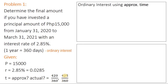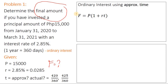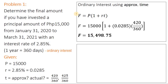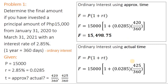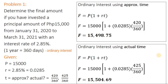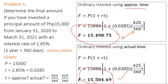Let's look at the solution. We start with ordinary interest using approximate time. We have the formula; since F is the unknown or the final amount, we use the formula for F. Substitute the values properly, then compute using your calculator. You should end up with 15,498.75. Similarly, for ordinary interest using actual time, you use the actual time. When you plug this in, it gives you 15,504.69. If the problem specifies approximate time, that's your solution; if it specifies actual time, use that solution.